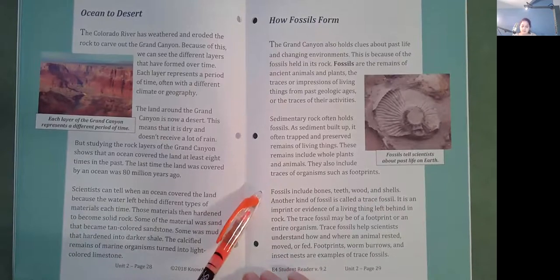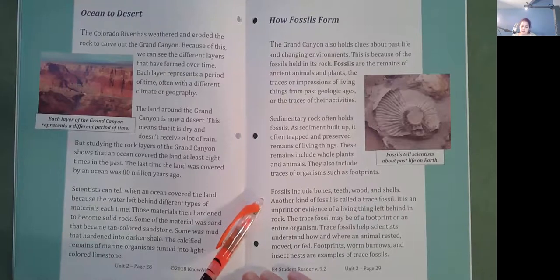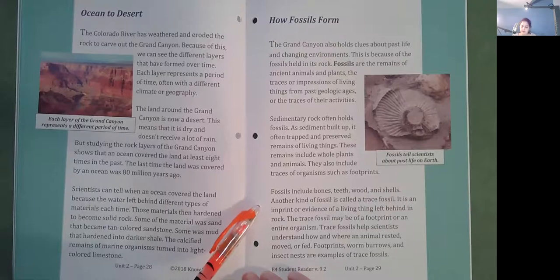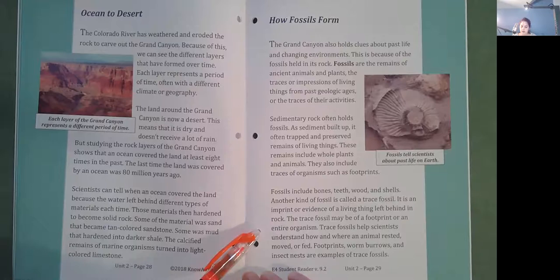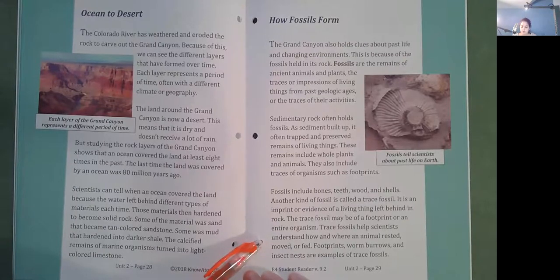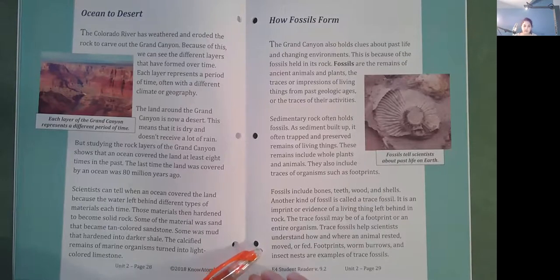Fossils include bones, teeth, wood, and shells. Another kind of fossil is called a trace fossil. It is an imprint or evidence of a living thing left behind in rock. The trace fossil may be of a footprint or an entire organism. Trace fossils help scientists understand how and where an animal rested, moved, or fed. Footprints, worm burrows, and insect nests are examples of trace fossils.